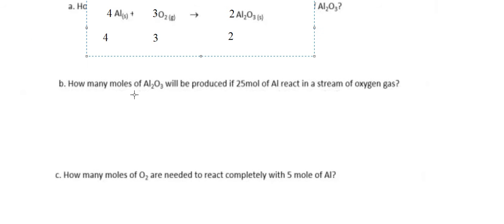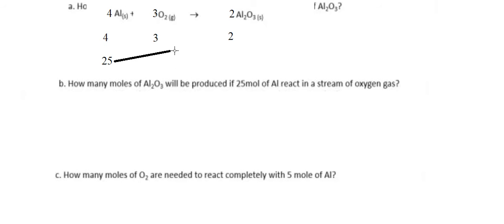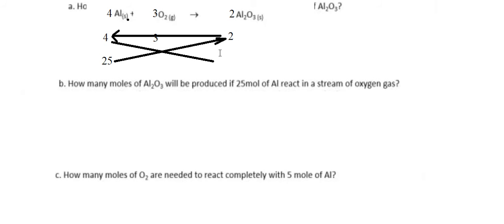Next question: how many moles of aluminum oxide will be produced if 25 moles of aluminum react in a stream of oxygen gas? They provide 25 moles of aluminum, so we put 25 here. For aluminum oxide, we have 25 multiplied by 2 divided by 4, which gives 12.5 moles.